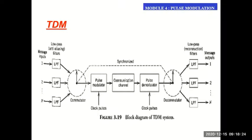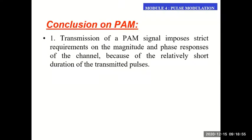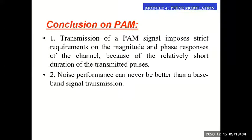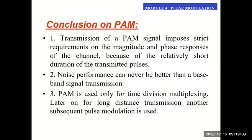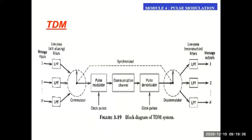We derived equations based on that assumption, but practically we always generate pulses — it is difficult to generate impulses. The major problem with PAM is that it is prone to noise. Even with strict requirements of magnitude and phase responses, we can't get very good performance compared to baseband transmission. So PAM is used more often for time division multiplexing rather than other schemes.